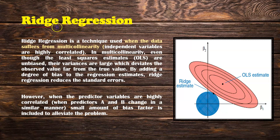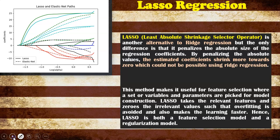Ridge regression is used when the data suffers from multicollinearity — for example, when two or more independent variables are highly correlated with each other, there is a chance of multicollinearity. In that case, we use ridge regression. Similarly, lasso regression — Least Absolute Shrinkage and Selection Operator — is an alternative to ridge regression. When estimated coefficients shrink more towards zero, which can happen using ridge regression, lasso becomes more beneficial.